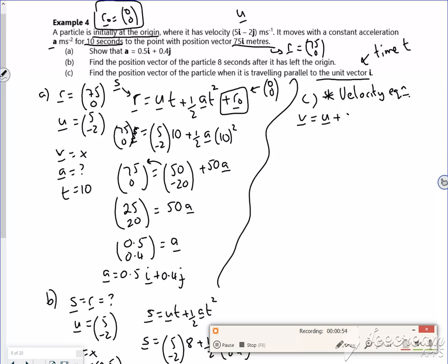So my velocity is my initial, which was (5, -2), plus my acceleration, which is (0.5, 0.4) times by t. So my velocity equation is (5 + 0.5t, -2 + 0.4t).